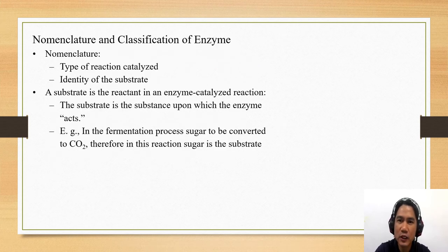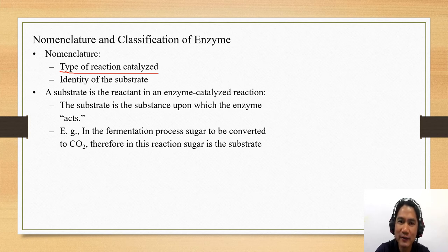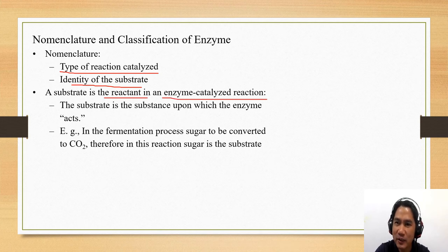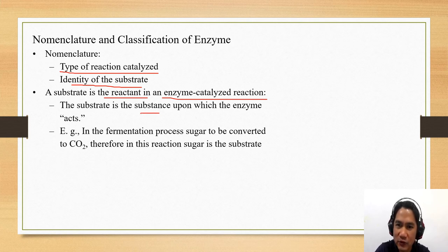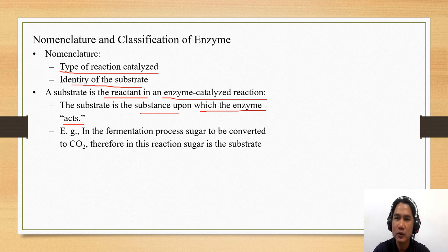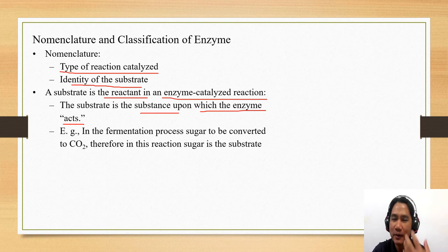How do we classify or name enzymes? The nomenclature or naming is based on the type of reactions they catalyze or the identity of the substrate. What is a substrate? A substrate is the reactant in an enzyme-catalyzed reaction. In other words, the substrate is the substance upon which the enzyme acts.